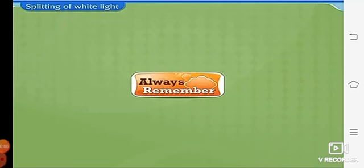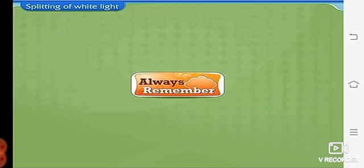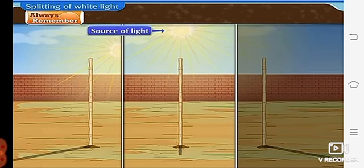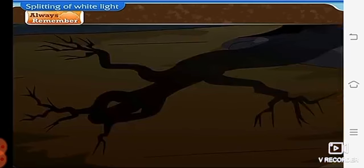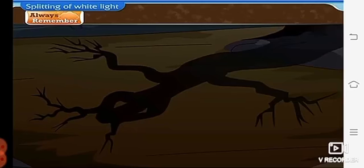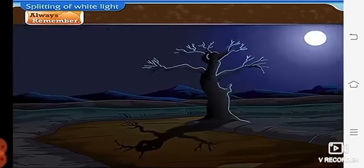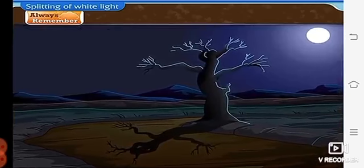Always remember, the shape of a shadow depends upon the source of light, the object and the surface on which it is formed. We should not get frightened by the shadows we see at night because there is simple science behind that.